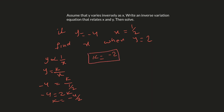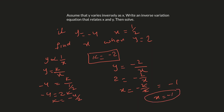The equation is y equals negative 2 over x. We need to find x when y equals 2. Plug in y equals 2: 2 equals negative 2 over x. By cross multiplication, x equals negative 2 over 2, so x equals negative 1. Hope it makes sense.